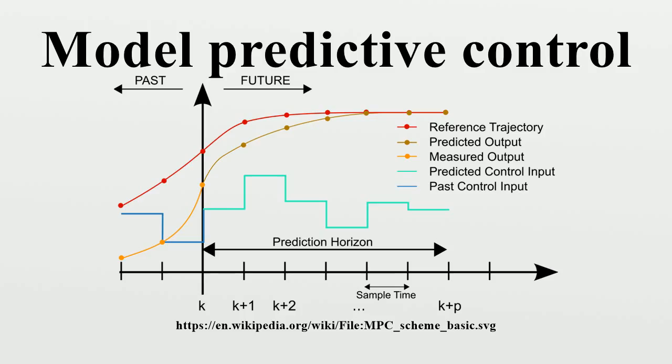Specifically, an online or on-the-fly calculation is used to explore state trajectories that emanate from the current state and find a cost-minimizing control strategy until time.